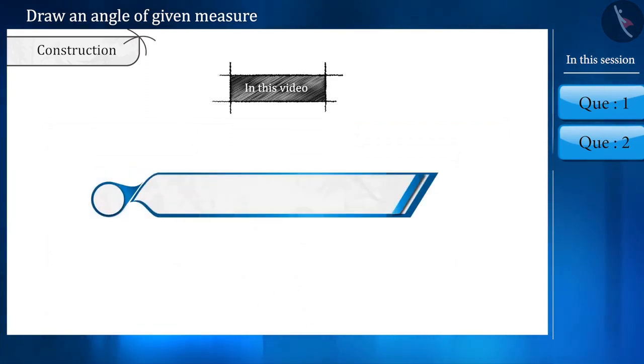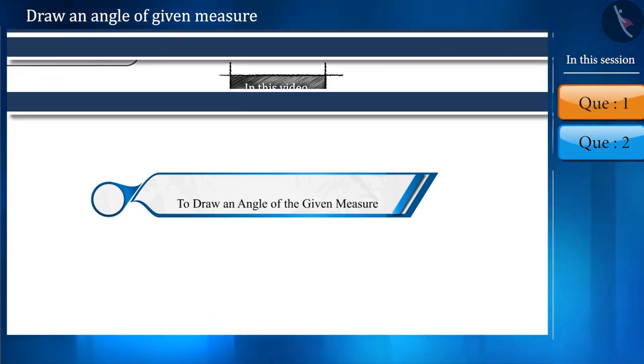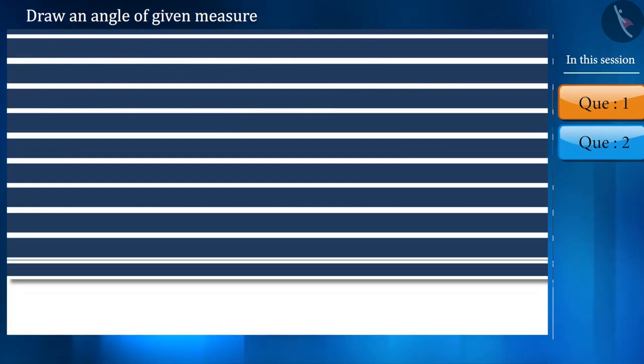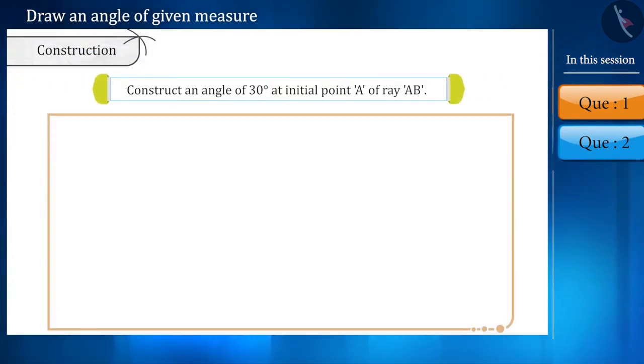In this video, we are going to learn about how one can draw an angle of a given measurement. So let us begin. The question is that from the initial point of the ray AB construct an angle of 30 degrees.